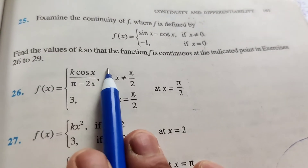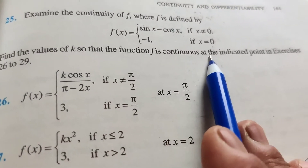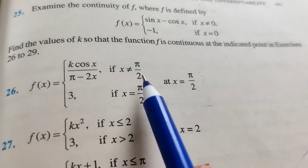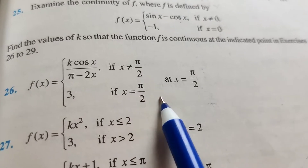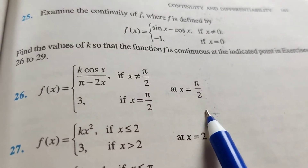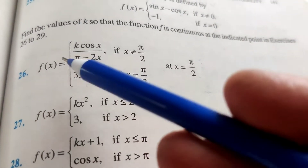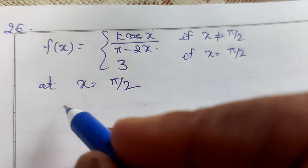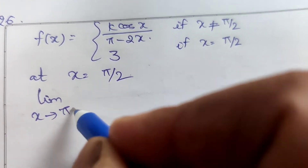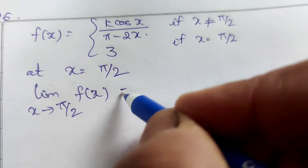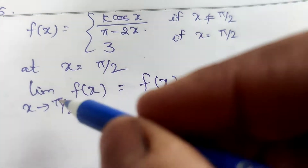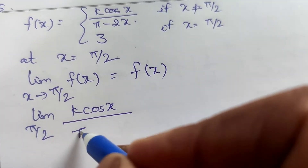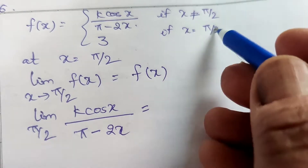Question number 26. Find the values of k so that the function f is continuous at the indicated point. f(x) = k cos x upon (π minus 2x) if x ≠ π/2, and 3 if x = π/2. Check continuity at x equal to π/2: the limit as x tends to π/2 of the function must equal 3.